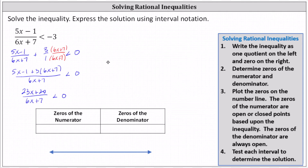Now that we've completed step one, step two is to determine the zeros of the numerator and denominator. To find the zero of the numerator, we set 23x plus 20 equal to zero and solve for x. We subtract 20 on both sides, giving us 23x equals negative 20. Dividing both sides by 23, we have x equals negative 20 twenty-thirds for the zero of the numerator.